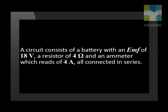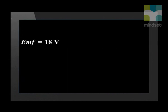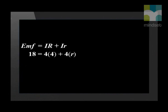A circuit consists of a battery with an EMF of 18 volts, a resistor of 4 ohm, and an ammeter which reads 4 ampere, all connected in series. Calculate the internal resistance R of the battery. From the question, we see that EMF equals 18 volts, the load or external resistance equals 4 ohm, current equals 4 ampere, and we need to find the internal resistance R. Let's substitute this into our equation and solve for R. Our internal resistance equals 0.5 ohm.